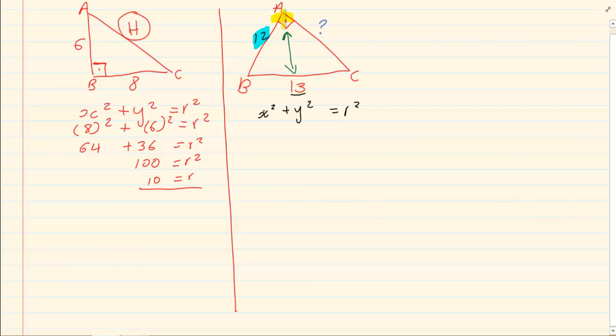the two sides that touch the 90 degree angle is always together. And the side that is not touching the 90 degree angle is always alone.